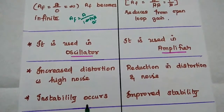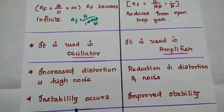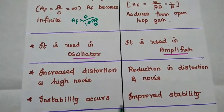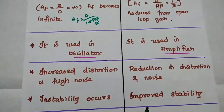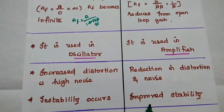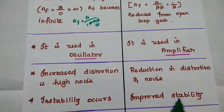There is no stability in positive feedback — instability occurs. In negative feedback, it provides improved stability.